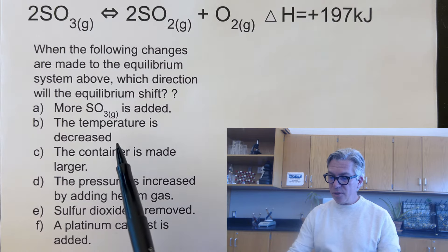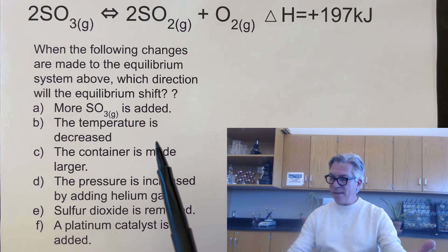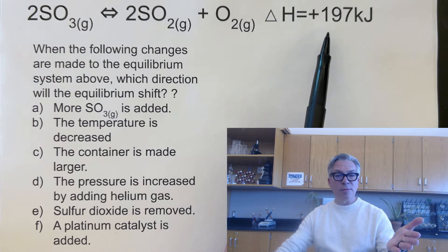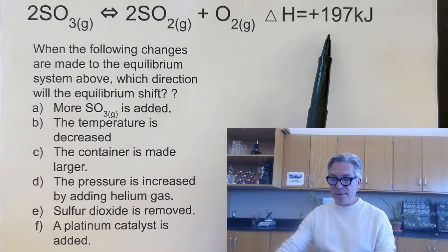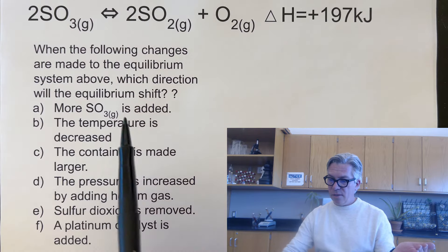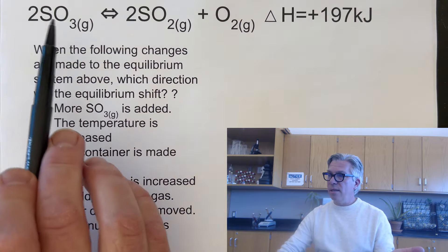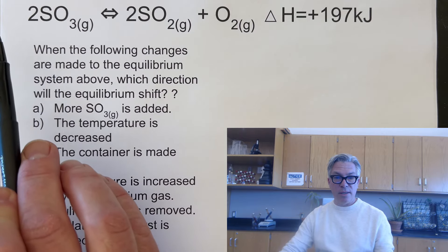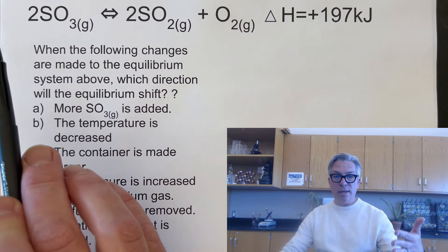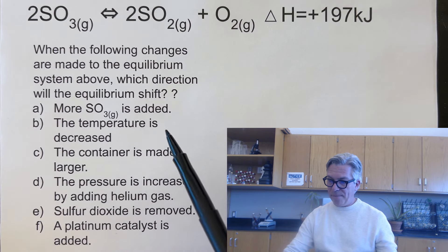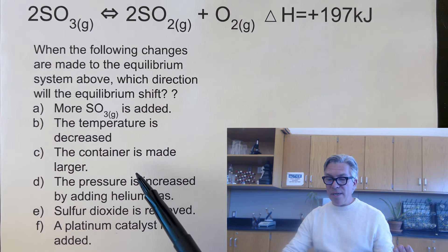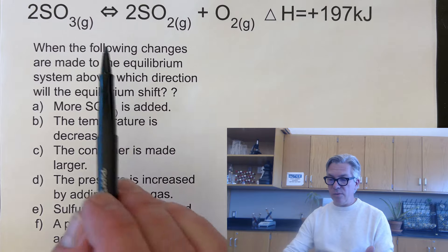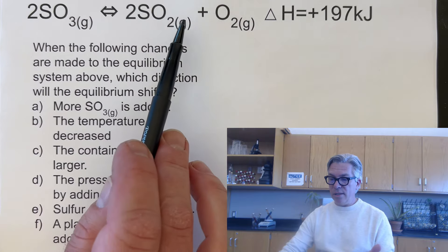If the temperature is decreased: the delta H value tells us this reaction is endothermic, so heat is a reactant. If the temperature is decreased, the equilibrium will shift left to make more heat — to replace the heat being taken away. If the container is made larger, it will shift to the side with more molecules, which is the right-hand side, since two molecules are becoming three.